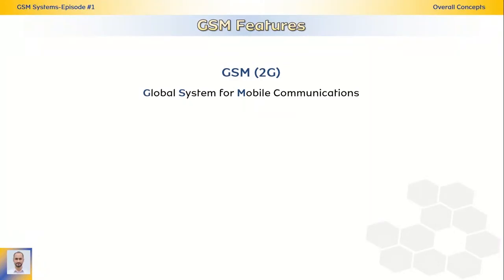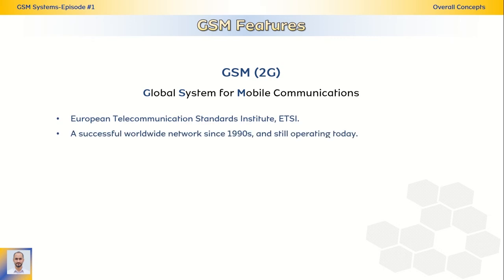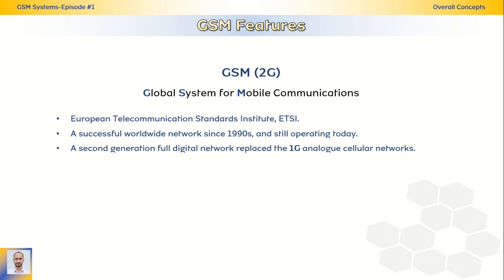The GSM features. GSM is a Global System for Mobile Communications, standardized by the European Telecommunication Standards Institute — a successful worldwide network since the 90s and still operating today. It is a second generation full digital network for traffic and signaling, replacing the first generation analog cellular networks. It is a public wireless network providing voice and data services. The main motivation for evolution is to increase data rates.